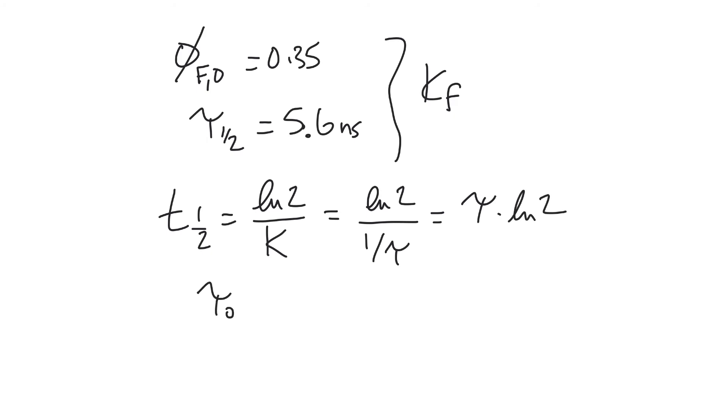So if we want tau sub 0, then it's our half-life over natural log of 2. So that is 5.6 nanoseconds over the log of 2. And I get that to be 8.08 nanoseconds.